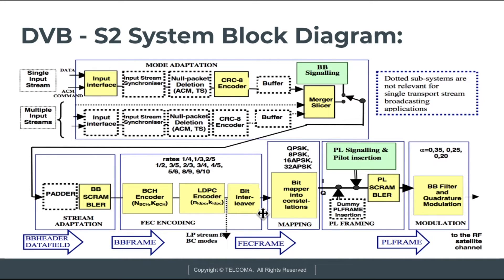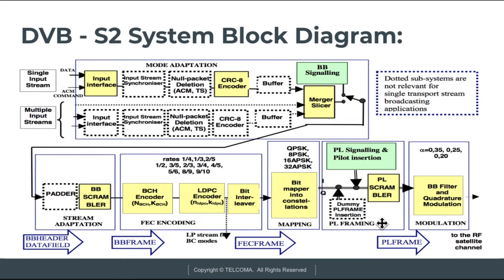The FEC frame signal goes through the bit mapper into a constellation. The modulation techniques available include QPSK, 8PSK, 16APSK, and 32APSK. One of these modulation techniques is selected. This constitutes the mapping system. After the mapping system, the signal passes through the PL framing system.